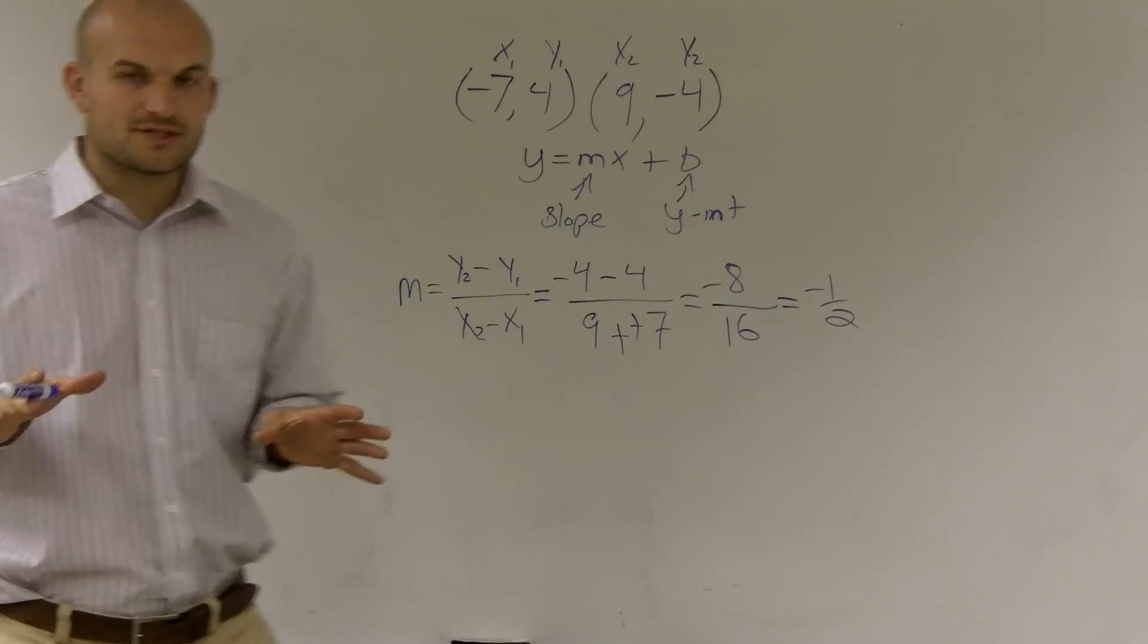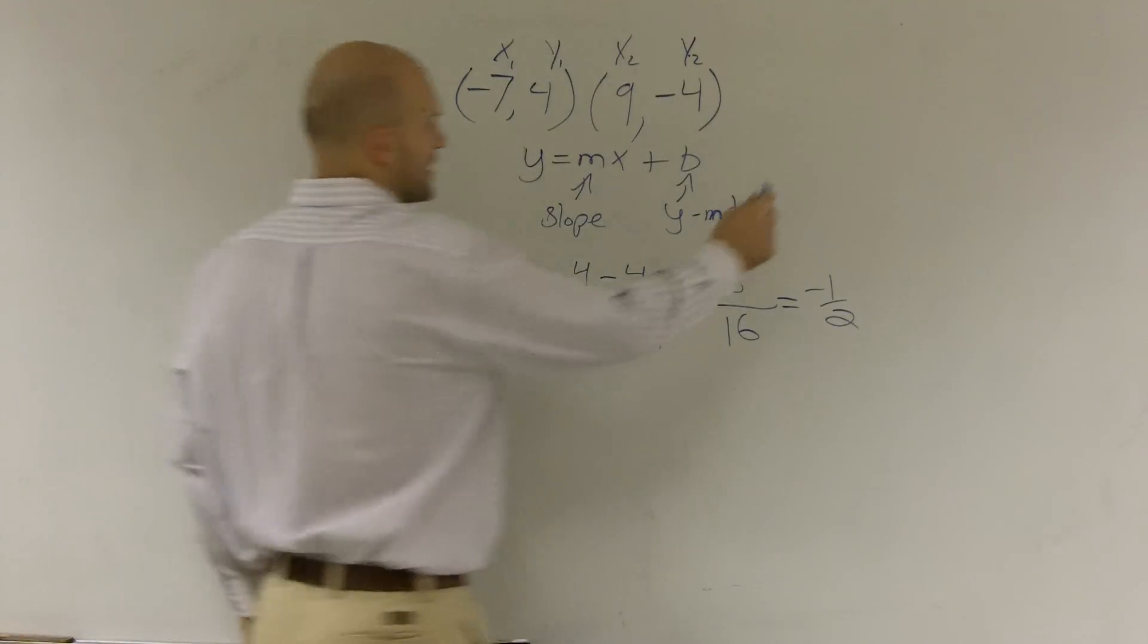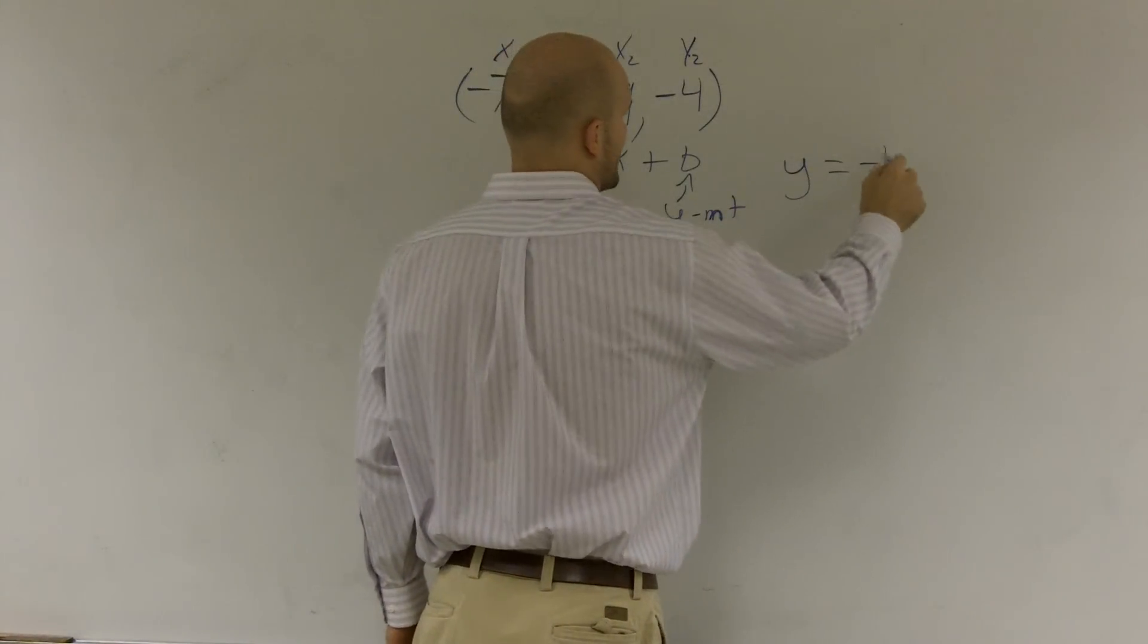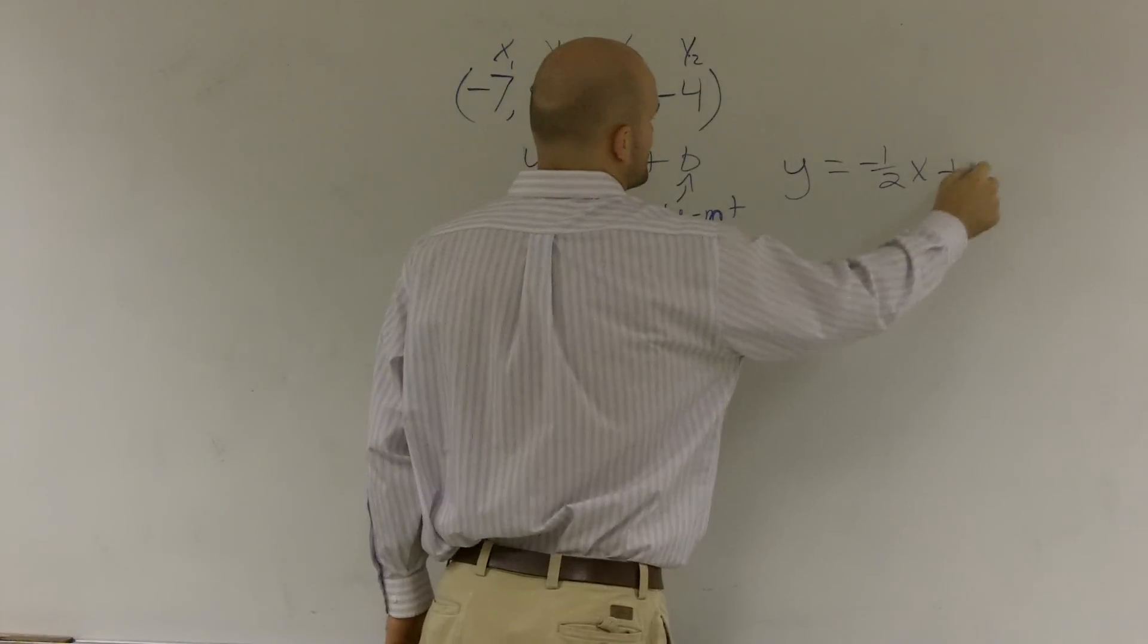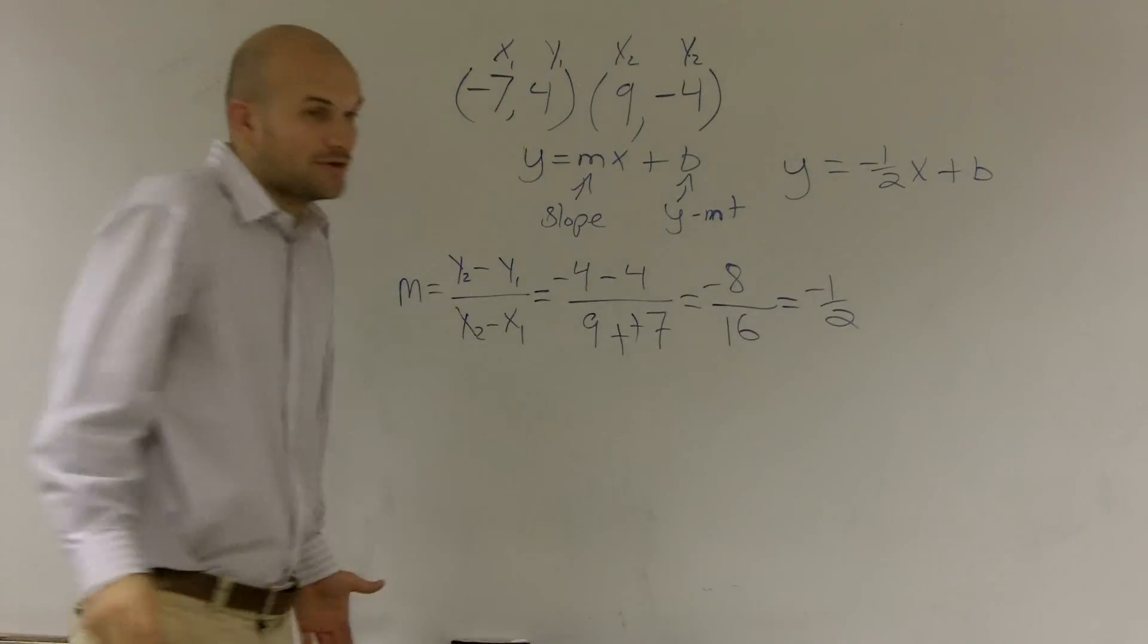Now, once you have this, you have this slope. So I have y equals negative 1 half x plus b. Now, I still don't know what b is.